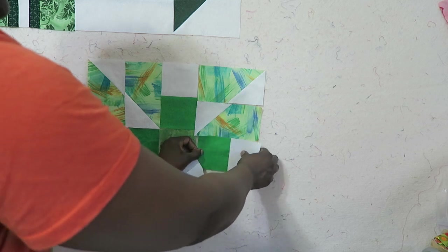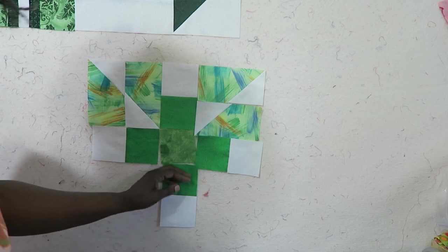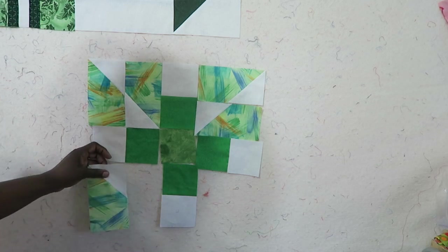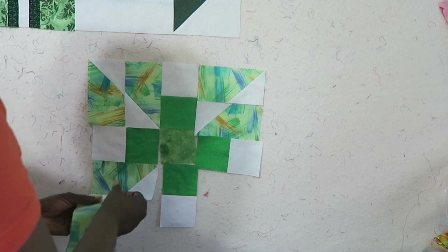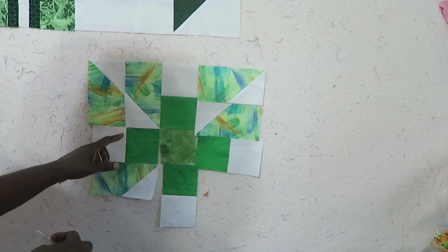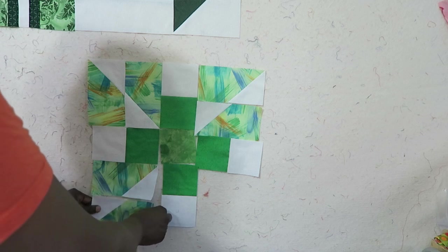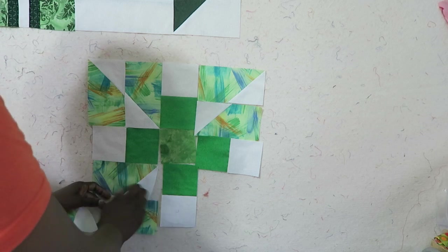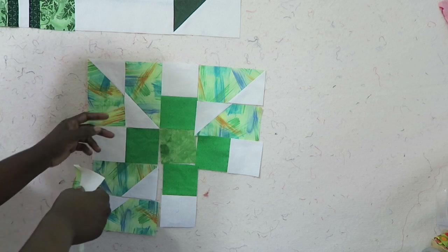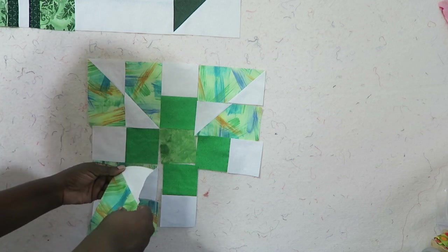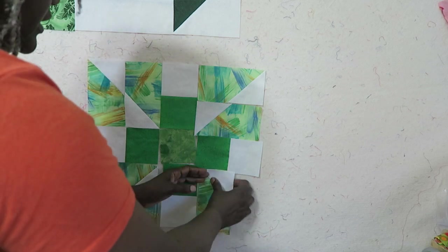I pressed my seams on the green and white pieces toward the green. That's important because when I go to press these units here on the side, I'm going to press toward the green, I'm going to press toward the print so that when they nest they'll nest in opposite directions.